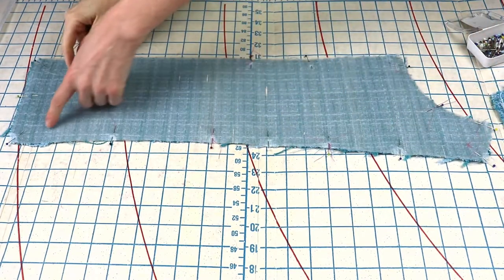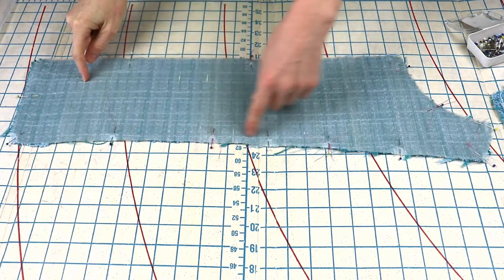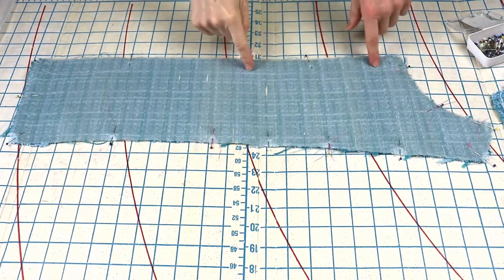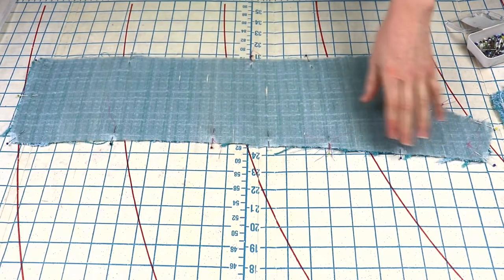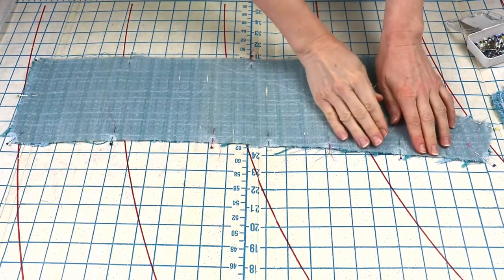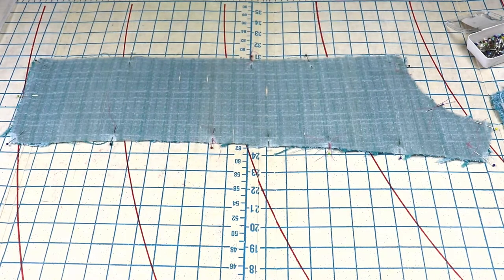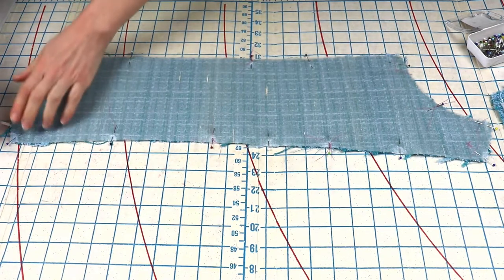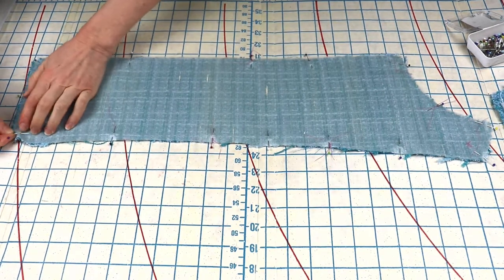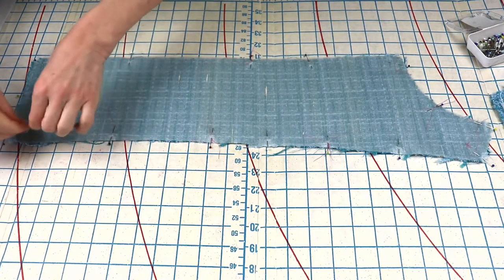Then, first of all, match all the notches. So I'm going to baste these two layers together. The reason why I'm doing that is for greater control. I just don't want anything to shift. Very simple, straight stitching, nothing fancy.